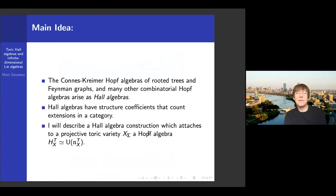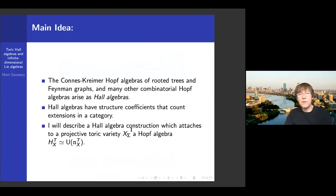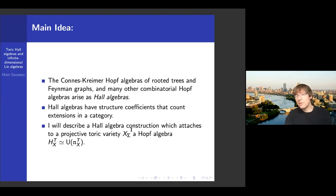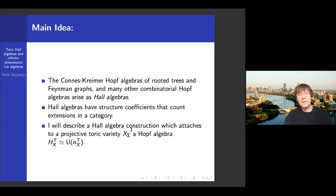The main idea of this talk is that one can interpret things like the Hopf algebra of rooted trees or the Hopf algebra of Feynman graphs, as well as a number of other combinatorial Hopf algebras, as Hall algebras. A Hall algebra is an algebra whose structure coefficients count extensions or short exact sequences in a category. The ultimate goal is to describe a construction which attaches to a projective toric variety a Hopf algebra, arising as a Hall algebra construction applied to a category of coherent sheaves in a somewhat strange setting.